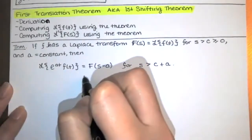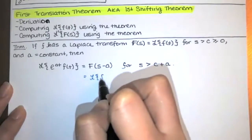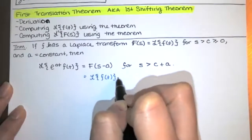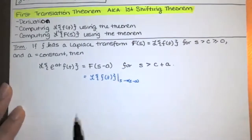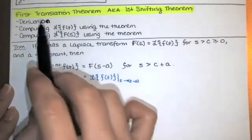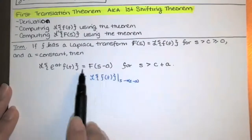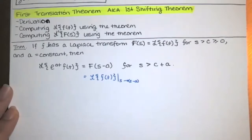If you're wondering what that means: this is the Laplace transform of f of t, but then we're replacing the s with s minus a. We call this the first translation theorem or the first shifting theorem because we are shifting the graph of F of s a units to the right, if we were graphing F of s versus s in that domain featuring that transformation parameter s.